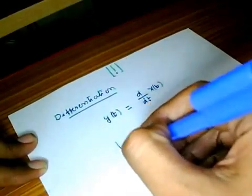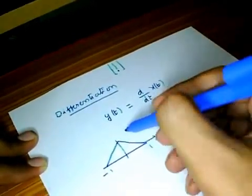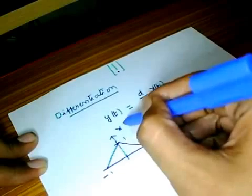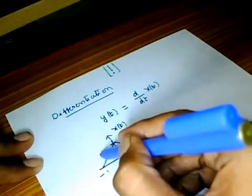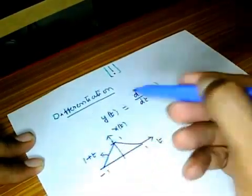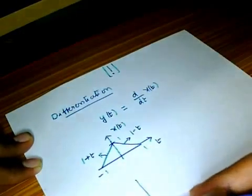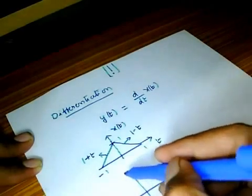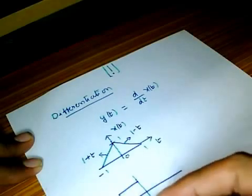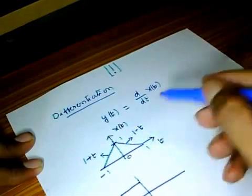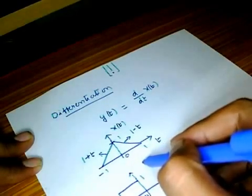For example, if I take the signal x of t to be a triangle — let us say from minus 1 to plus 1 with amplitude 1 — let us try to find the derivative of this signal. The equation of this straight line will be 1 plus t, and the corresponding equation on the other side will be 1 minus t. So if you differentiate this signal: from minus 1 to 0, the equation of the line is 1 plus t, so if you differentiate that you will get 1. And from 0 to 1, if you differentiate that, you will get minus 1. So this is the derivative of x of t.